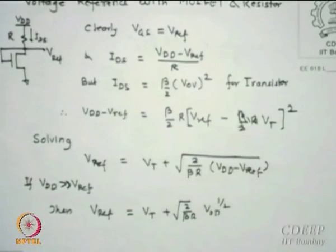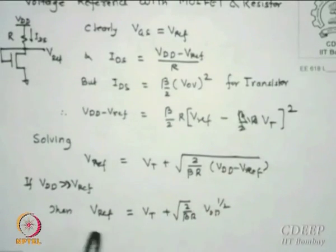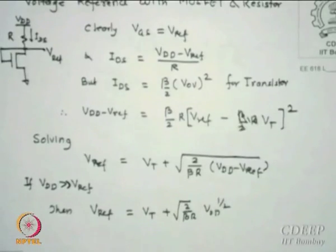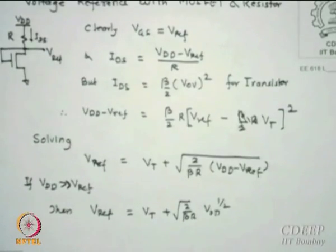Assuming Vdd is very large compared to V_reference, we can write V_reference ≈ Vt + sqrt(2/(beta*R)) * sqrt(Vdd/2). This is directly a function of Vdd and temperature through beta_dash. So this divider does not seem to be a great voltage reference. You can adjust V_reference by adjusting W/L, R, and the supply voltage.